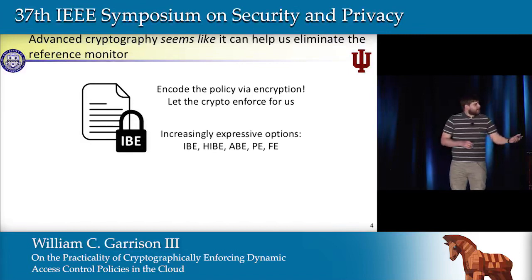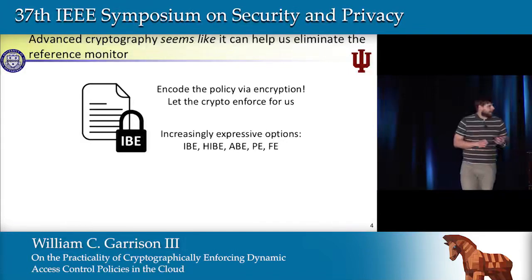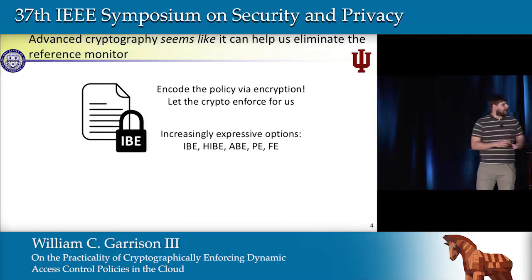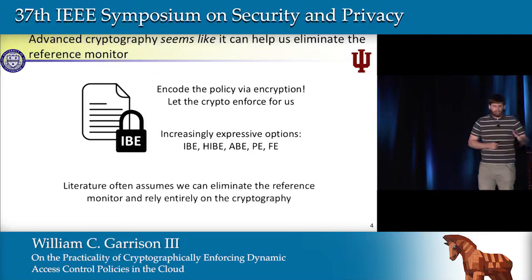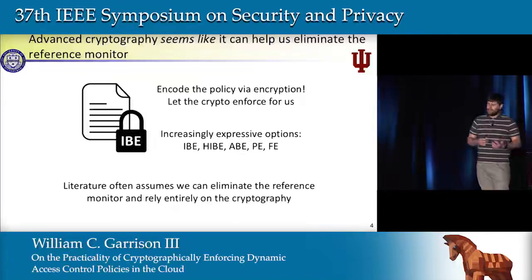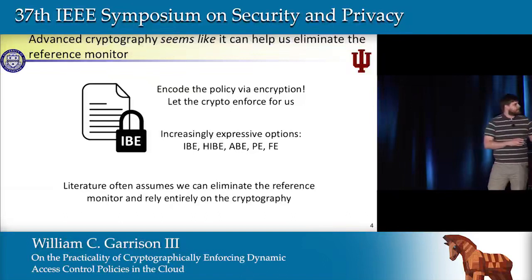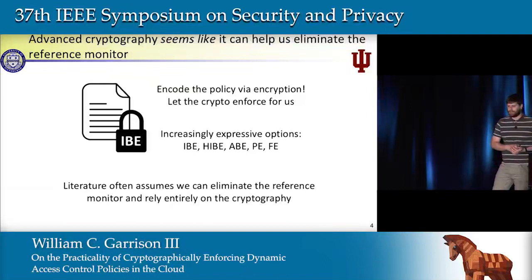We have increasingly expressive options to accomplish this: identity-based encryption, hierarchical IBE, attribute-based encryption, all through predicate and functional encryption. The literature on these often assumes, sometimes implicitly, that no reference monitor is needed if we trust the crypto to enforce our policies.